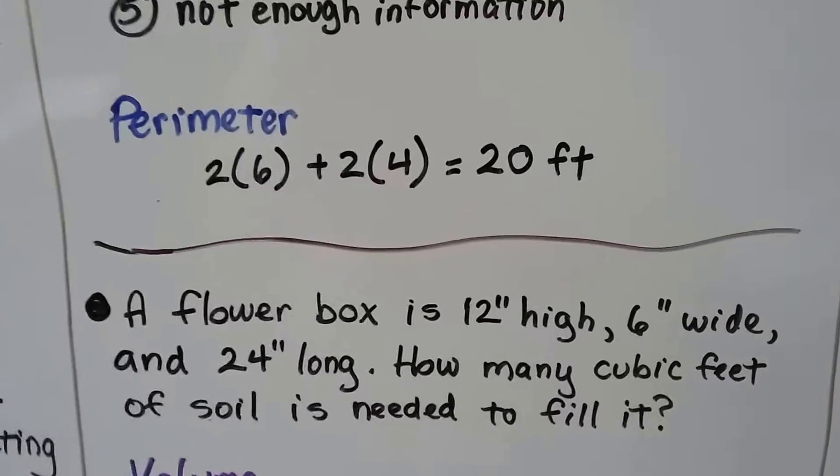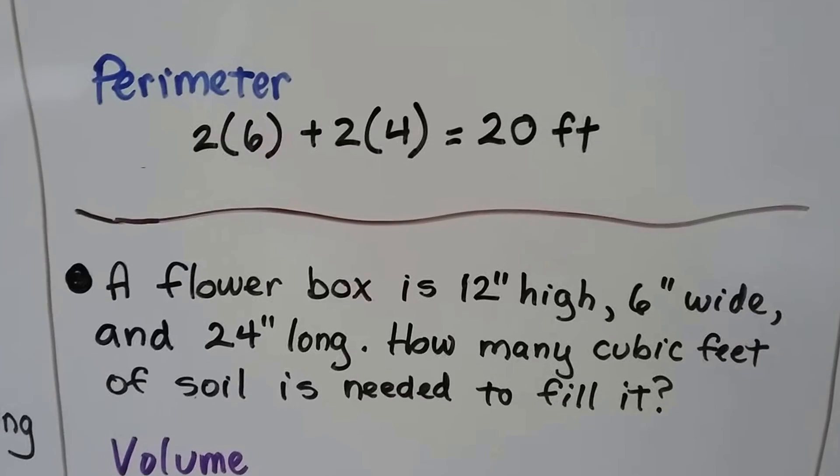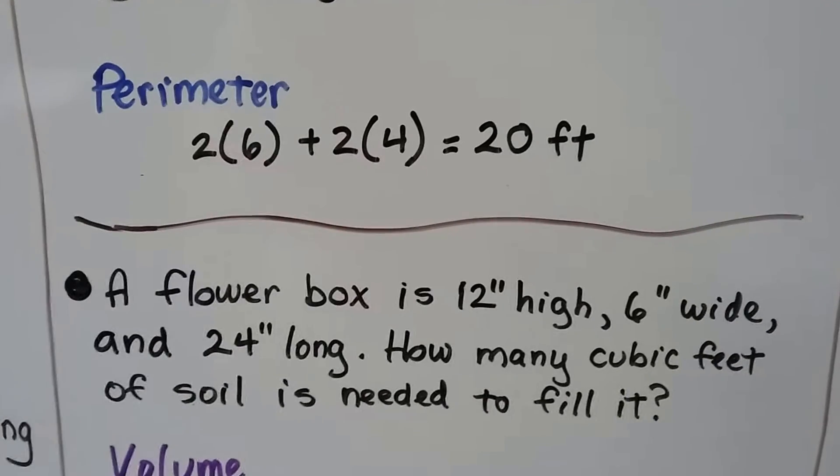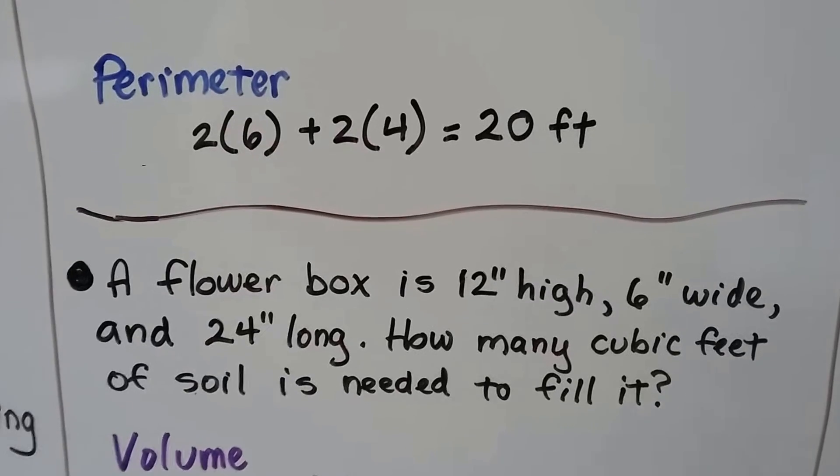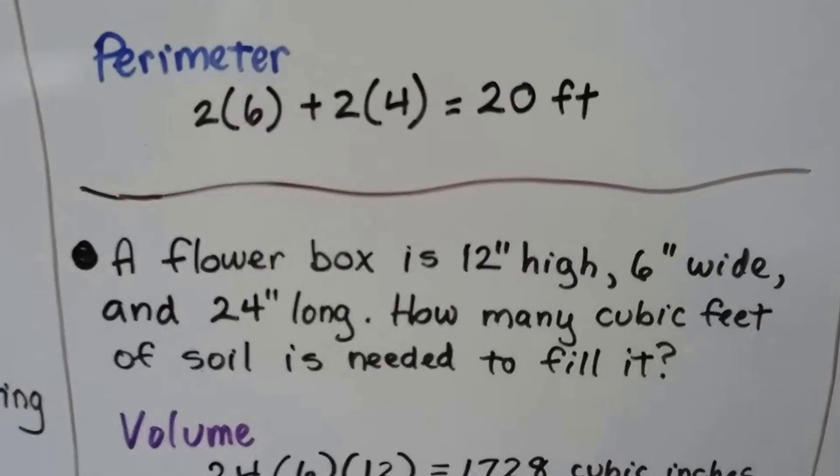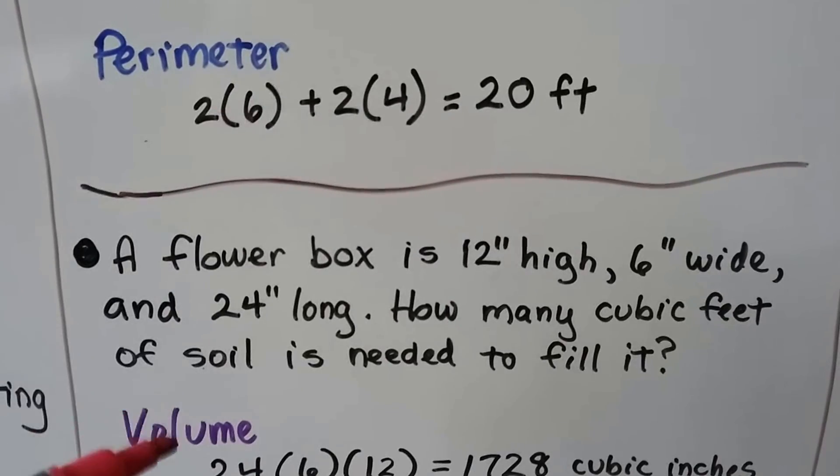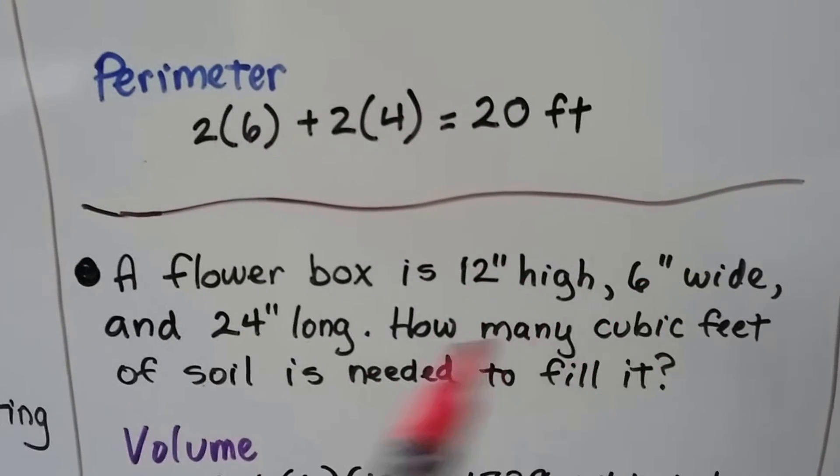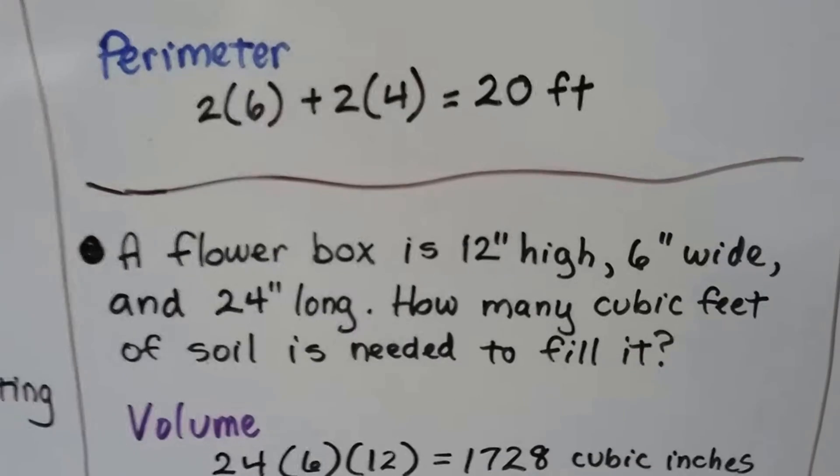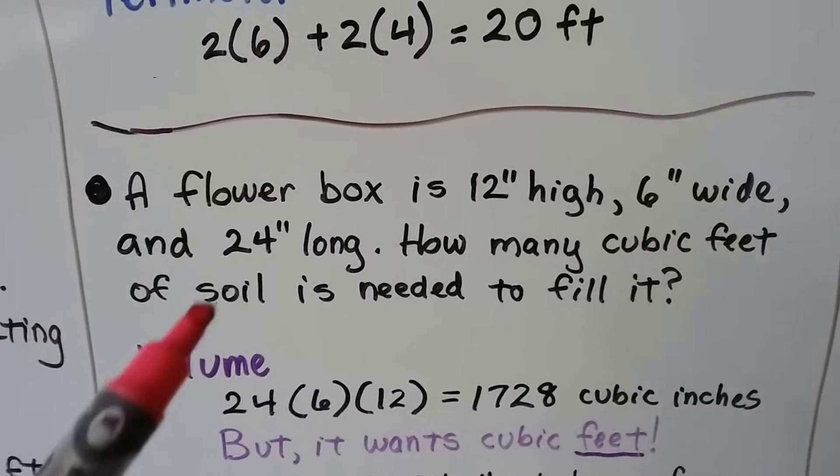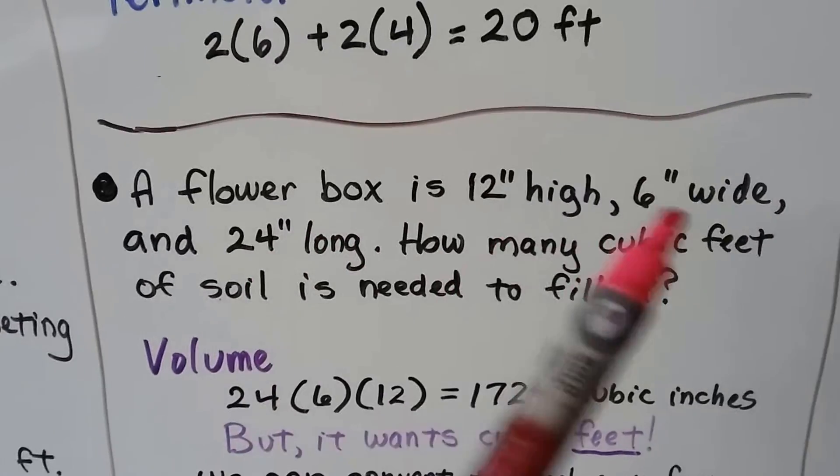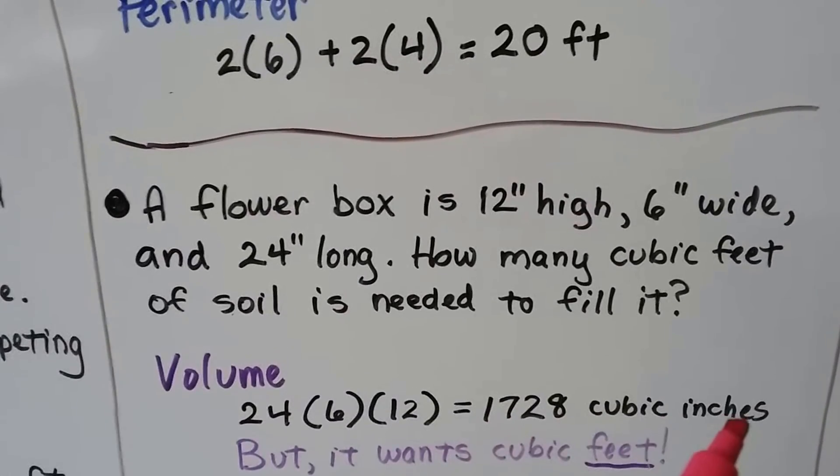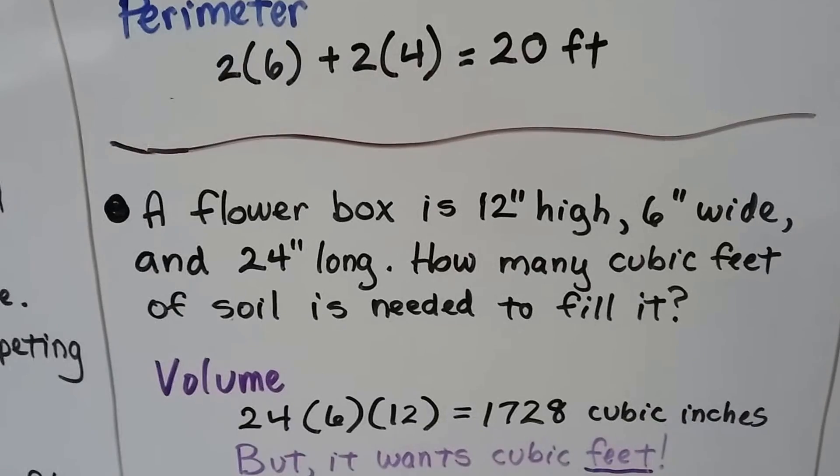A flower box is 12 inches high, 6 inches wide, and 24 inches long. How many cubic feet of soil is needed to fill it? So we need to find the volume. We need to find out how much will fill that flower box. But look, it gives us inches high, inches wide, and inches long, but it wants cubic feet. We can multiply the 24 times the 6 times the 12. And we get 1,728 cubic inches. But it wants cubic feet, though.